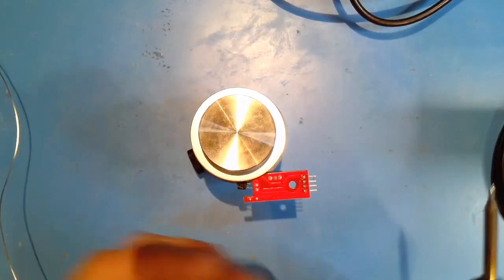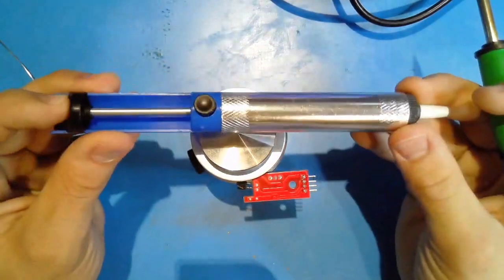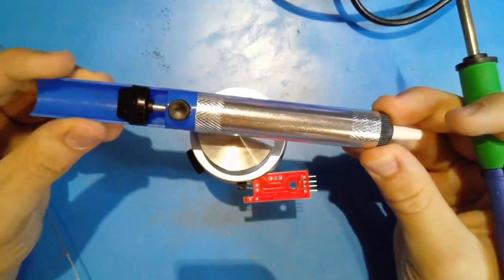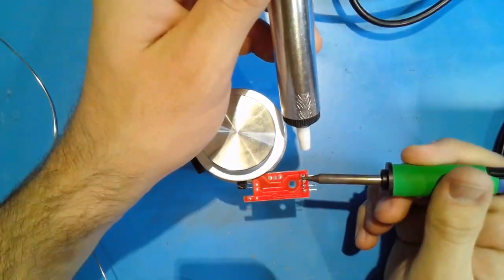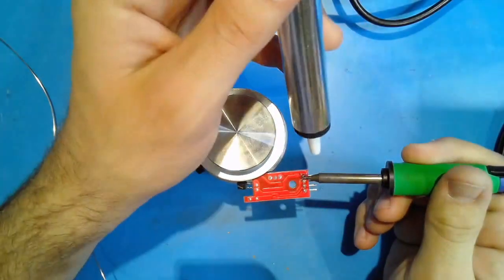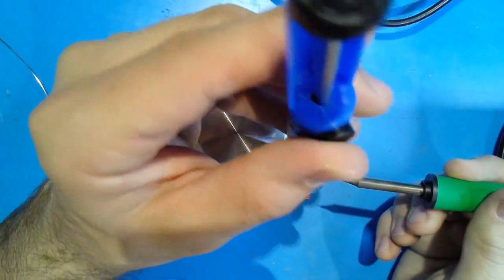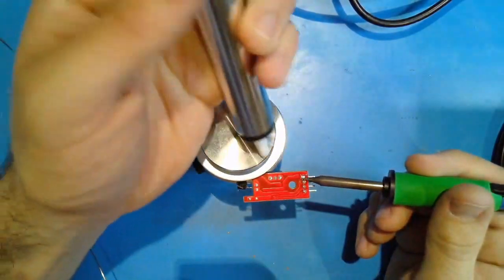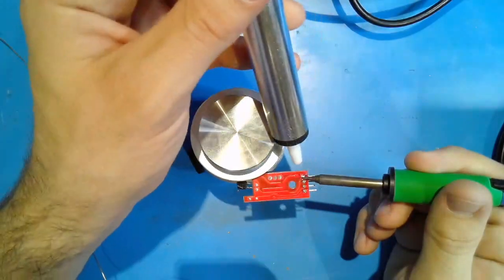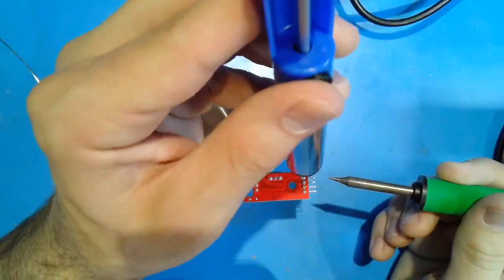The second is a manual solder sucker or desoldering pump. Press the pump down until it locks. Hold the solder sucker in one hand and heat the joint to be desoldered with the soldering iron in the other hand. Once melted, place the tip of the solder sucker near the joint and press the button. The solder will be forced into the pump.